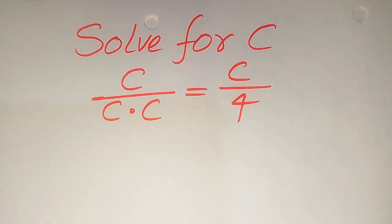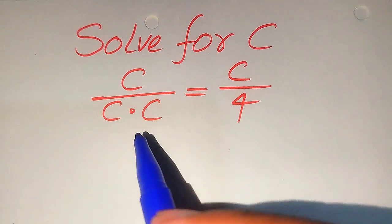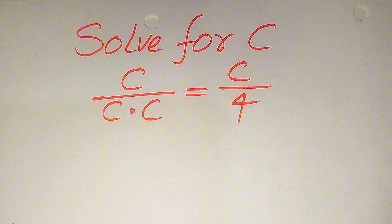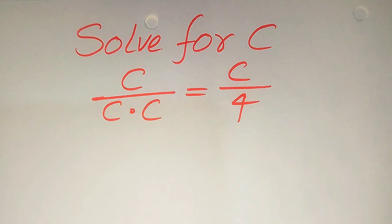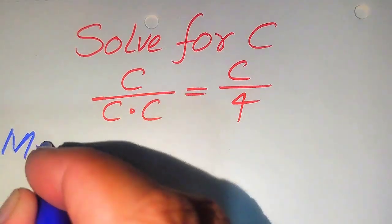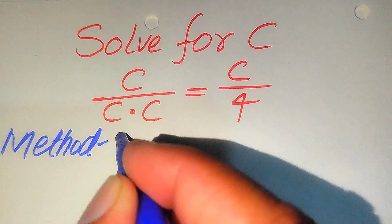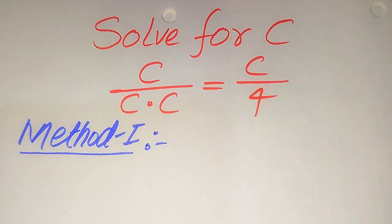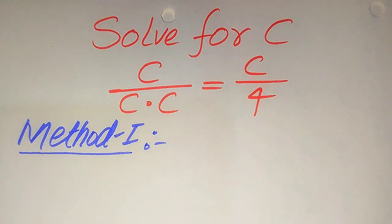Hello everyone. How to solve this problem: for the values of c, if we have c divided by c multiplied by c equals c divided by 4, and we solve this problem for all the values of c. First we find all the roots of this equation, and at the end we verify which of the roots are solutions and which are extraneous roots. We solve this problem using two methods.